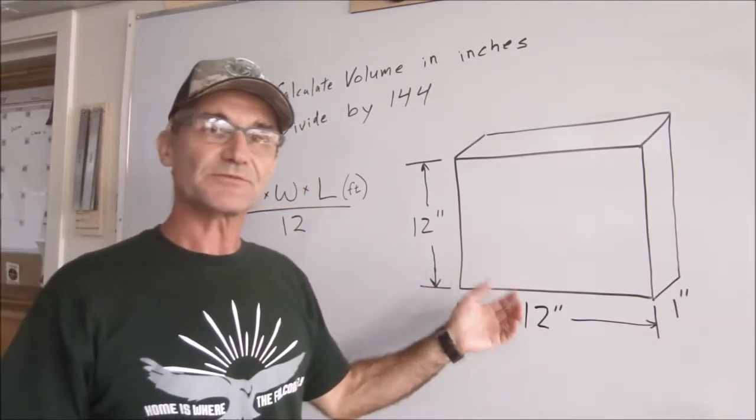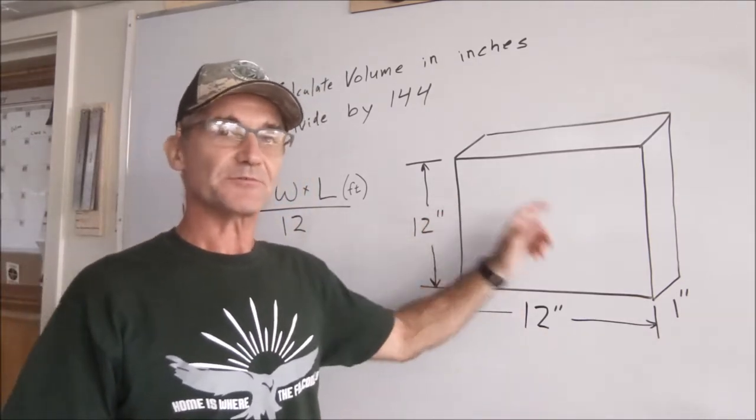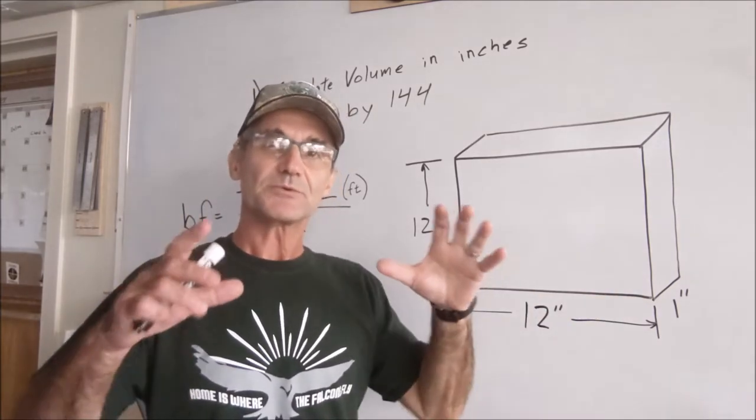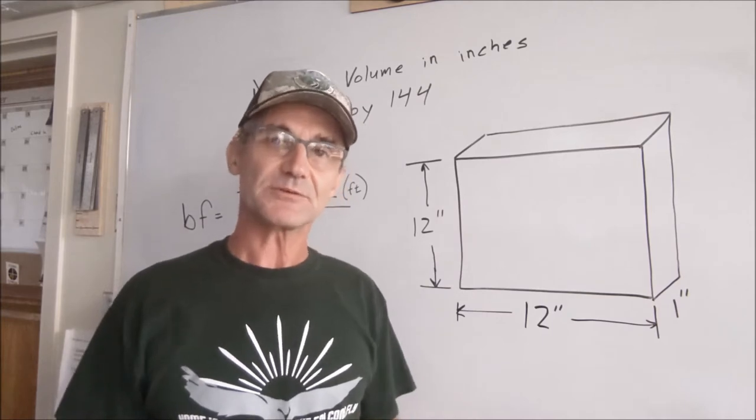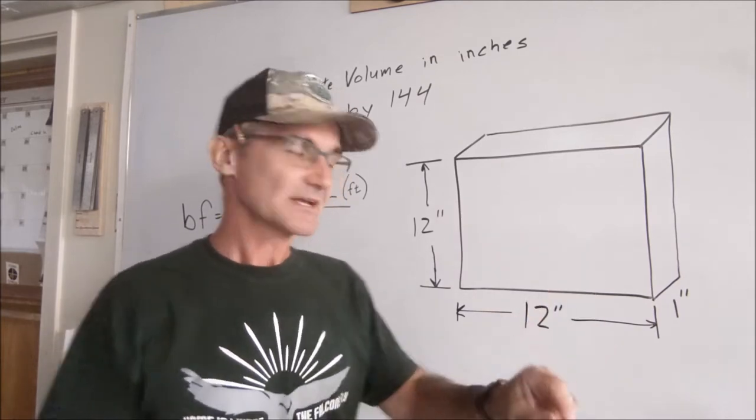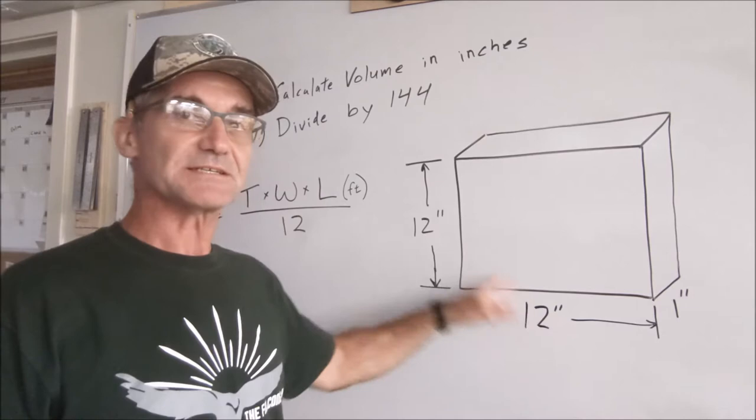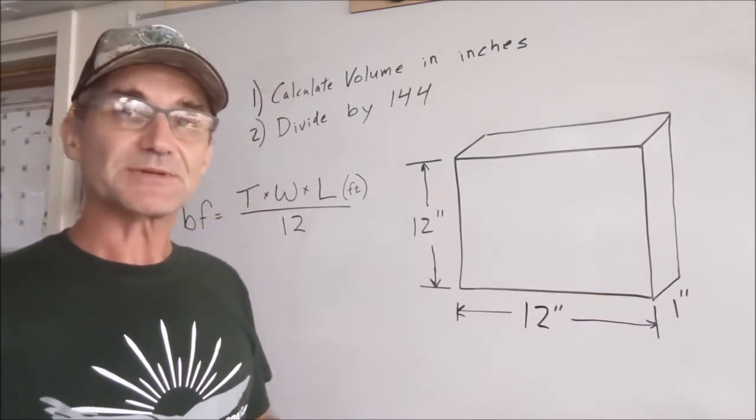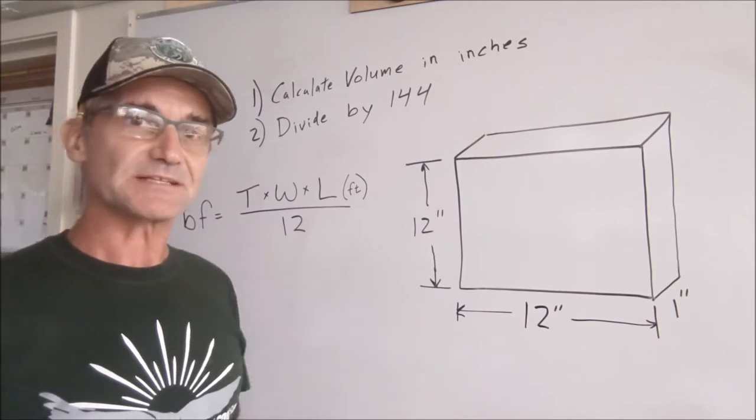So one single board foot is 12 by 12 by 1, 1 deep. So 12 times 12 is 144. So one board foot is 144 cubic inches. The cubic inches comes from the fact that you're multiplying inches by inches by inches. So it's a volume measurement even though a lot of times it seems like a linear measurement.